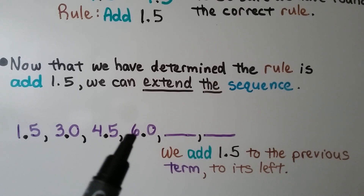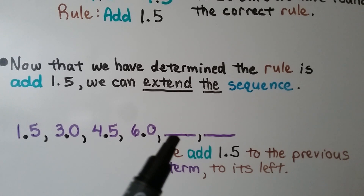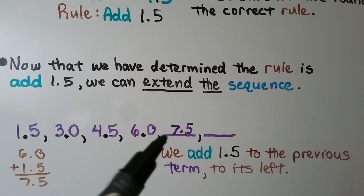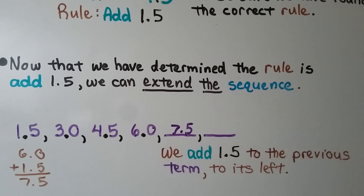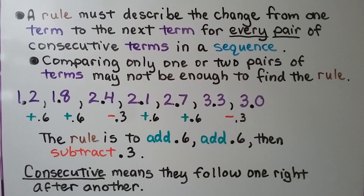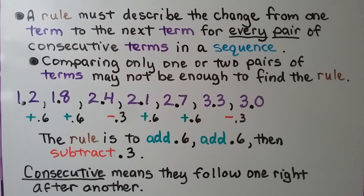Now that we've determined the rule is to add 1 and 5 tenths, we can extend the sequence. We have 6. We add 1 and 5 tenths to get 7 and 5 tenths. Then we add another 1 and 5 tenths to the previous term. A rule must describe the change from one term to the next term for every pair of consecutive terms in a sequence.